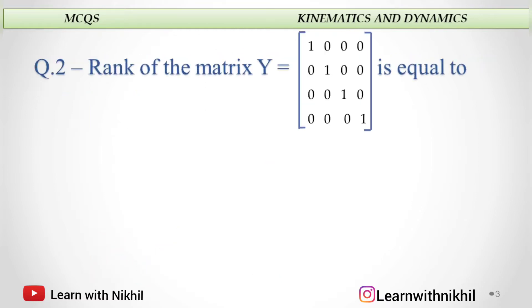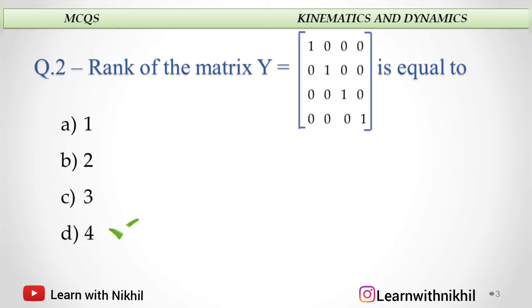Second, rank of the matrix Y — again given as an identity matrix — which is equal to 1, 2, 3, or 4? So the rank of the matrix is 4, as it is a 4 by 4 matrix.